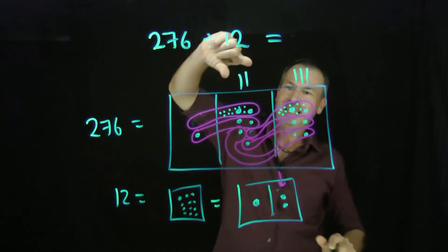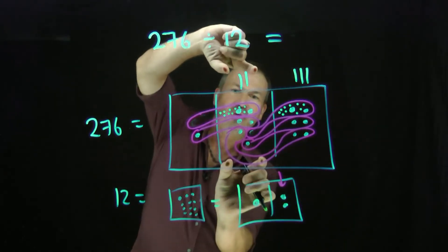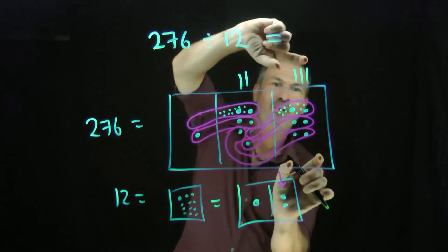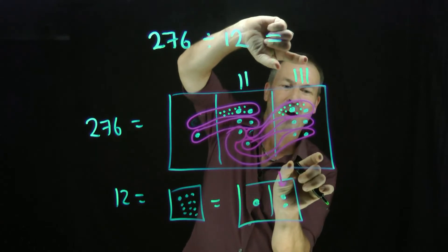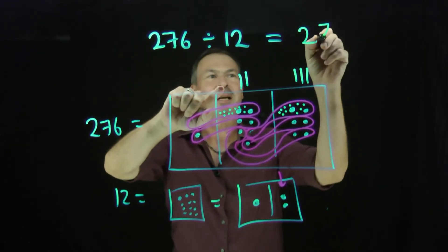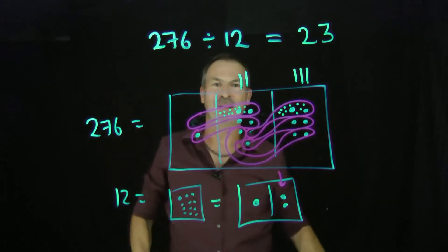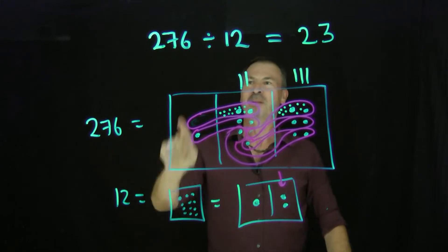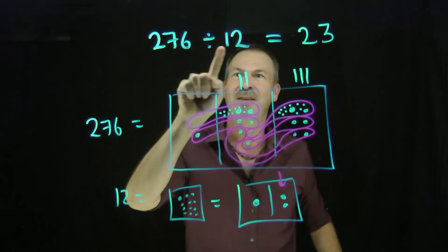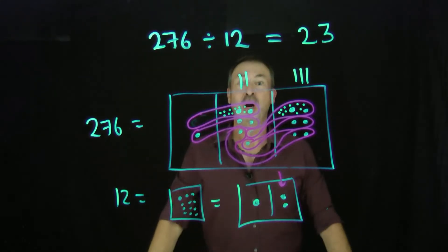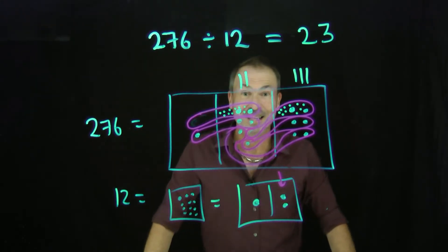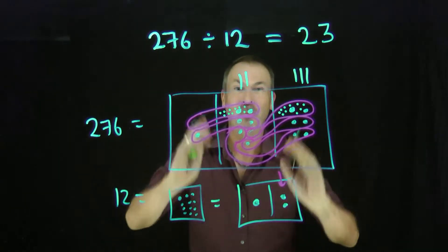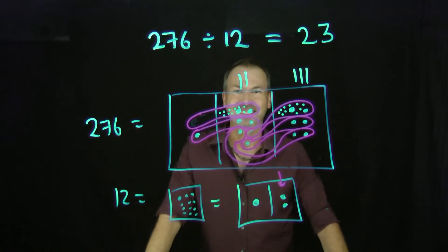So I see that I've got two groups of 12 at the tens level and three groups of 12 at the ones level. The answer must be 23. Double check on the calculator: 276 divided by 12 really is 23. And look, we're seeing it. This is kind of fun.